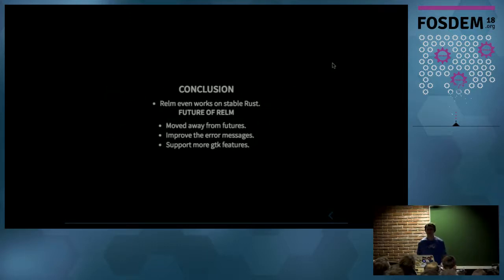So even though I use attributes, Realm can work on stable Rust because I use a hack to have the procedural macro to work. And the future of Realm may be without features. Also, I will work to improve the error messages because at the time I first started Realm, it was using the old syn crate. So we didn't have access to the position of the token. So that's why when you have an error message, it's shown on the widget attribute, which is not convenient. And I will support more GTK features.